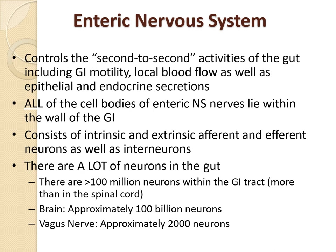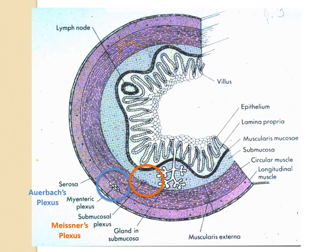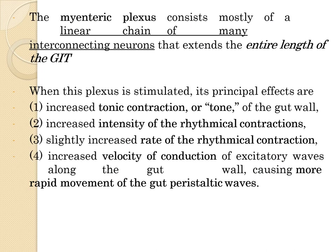In the brain there are approximately 100 billion neurons, and the vagus nerve has approximately 2000 neurons. The myenteric plexus is present between the circular and longitudinal muscular layers, and the Meissner's plexus is in the submucosal layer. The myenteric plexus consists mostly of a linear chain of many interconnecting neurons that extends along the entire length of the GI tract.